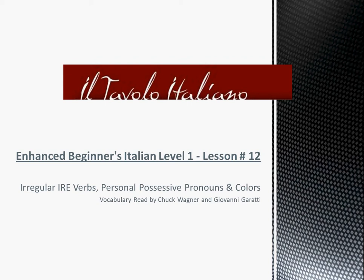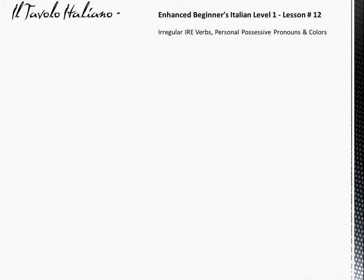Ciao e benvenuti al Tavolo Italiano. Today is the Enhanced Beginners Italian Level 1, Lesson 12 Vocabulary: irregular IRE verbs, personal possessive pronouns, and colors. Vocabulary read by Chuck Wagner and Giovanni Garatti. To start with, I will read the word or phrase in English. Giovanni will then read it in Italian and provide a brief pause, at which point you can practice your pronunciation by repeating what he said. He will then repeat it again so you can see how you did. Here we go.